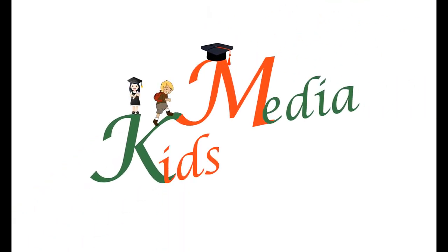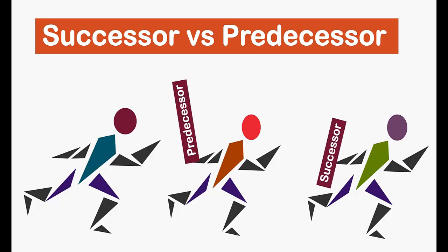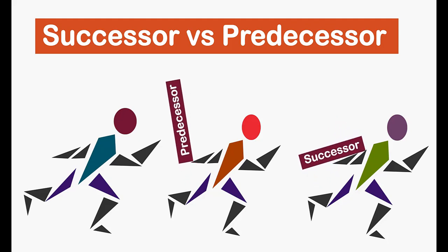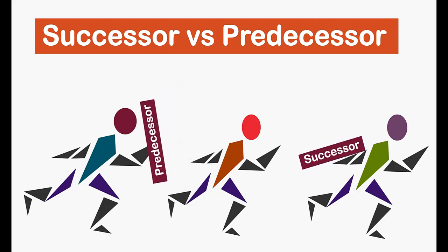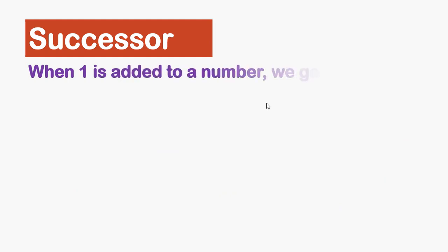Kids Media. In this video, we are going to learn about successor and predecessor. The definition of successor is: when one is added to a number, we get its successor.